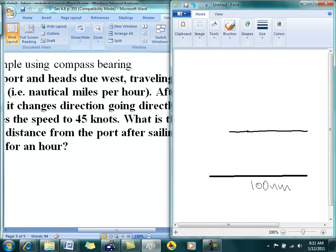If you're traveling at 50 miles per hour, how many miles are you going to travel in two hours? 50 knots is 50 nautical miles per hour times two hours, so that's 100 nautical miles. Then what does the person do?